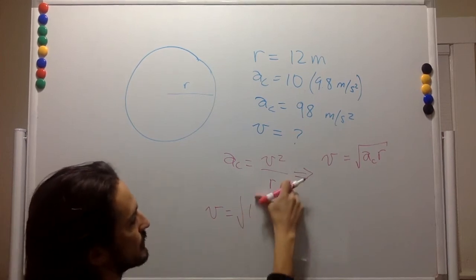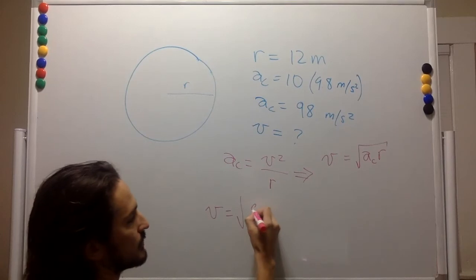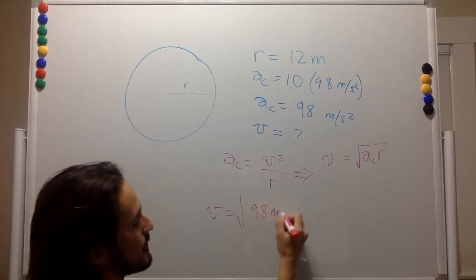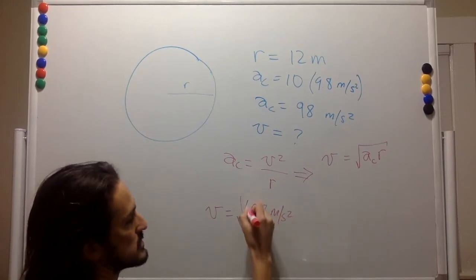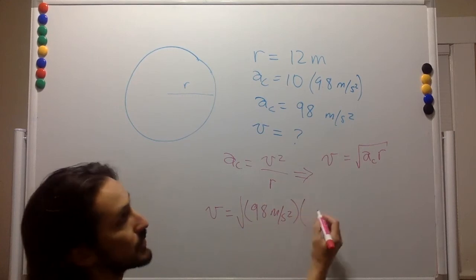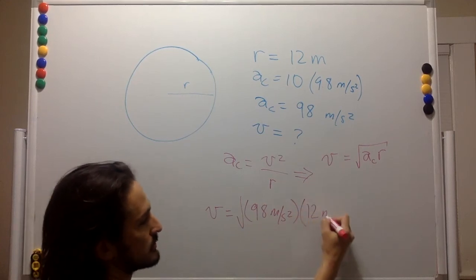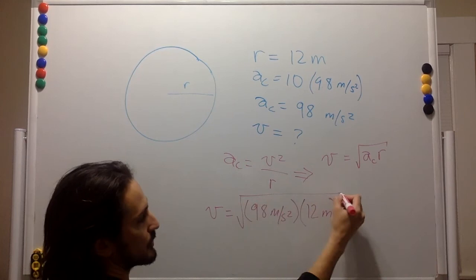So that's 10g times the radius, and we take the square root of that.